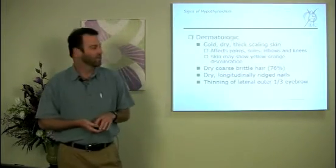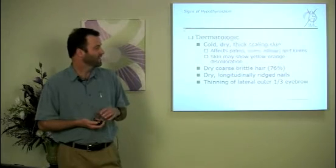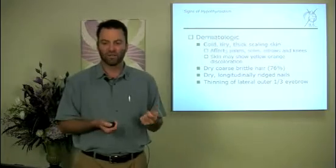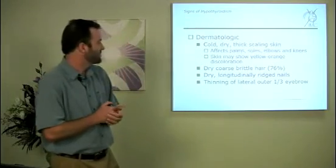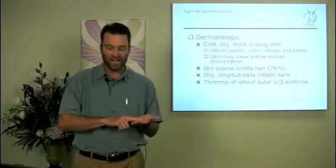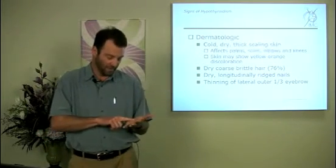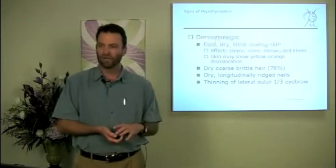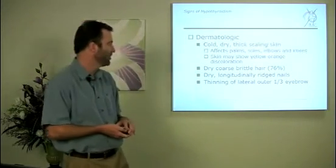Dermatologic signs. The cold, dry, thick, scaling, thin. Cold extremities in particular. Affects the palms and the soles, elbows and knees, the scaling. And you may see a yellow orange discoloration. That has to do with accumulation of beta carotene and conversion to vitamin A. You need thyroid, and so you can get a secondary buildup of it in the skin.